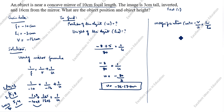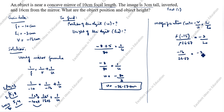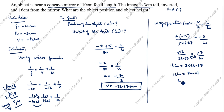Substituting: minus v over u = hi/ho, so minus(minus 16) divided by (minus 26.67) equals (minus 3)/ho. The two negatives cancel, giving 16/26.67 = minus 3/ho. Cross-multiplying: ho equals 3 times 26.67 divided by 16, which is 80.01 divided by 16, giving ho equals 5 centimeter.